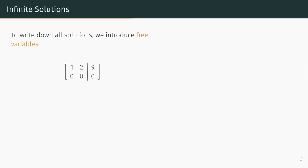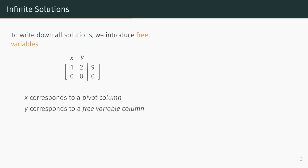Recall the row reduced form of the augmented matrix corresponding to the system from earlier. The first column is a pivot column and corresponds to the variable x. The second column is a free variable column and corresponds to the variable y. For this reason, we will also call y a free variable.